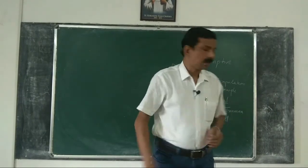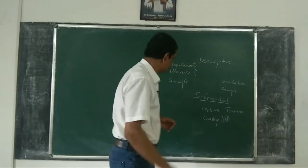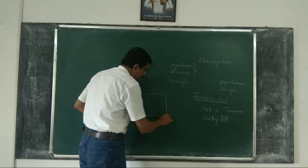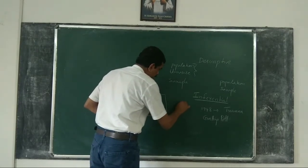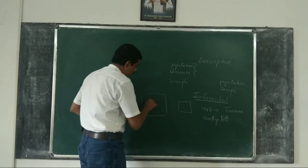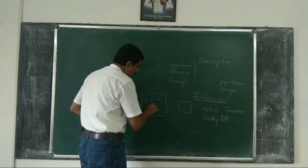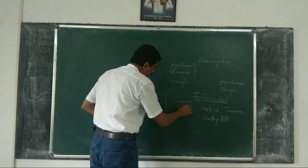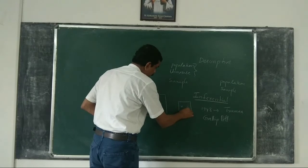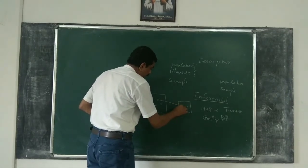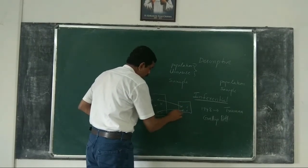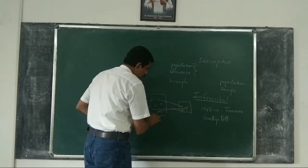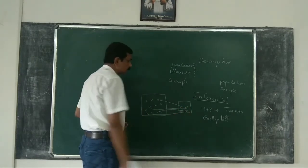Because this is what is feasible. In the form of a graph, this is the population and this is the sample. The population consists of all the units, and the sample consists of selected units taken from within the population.